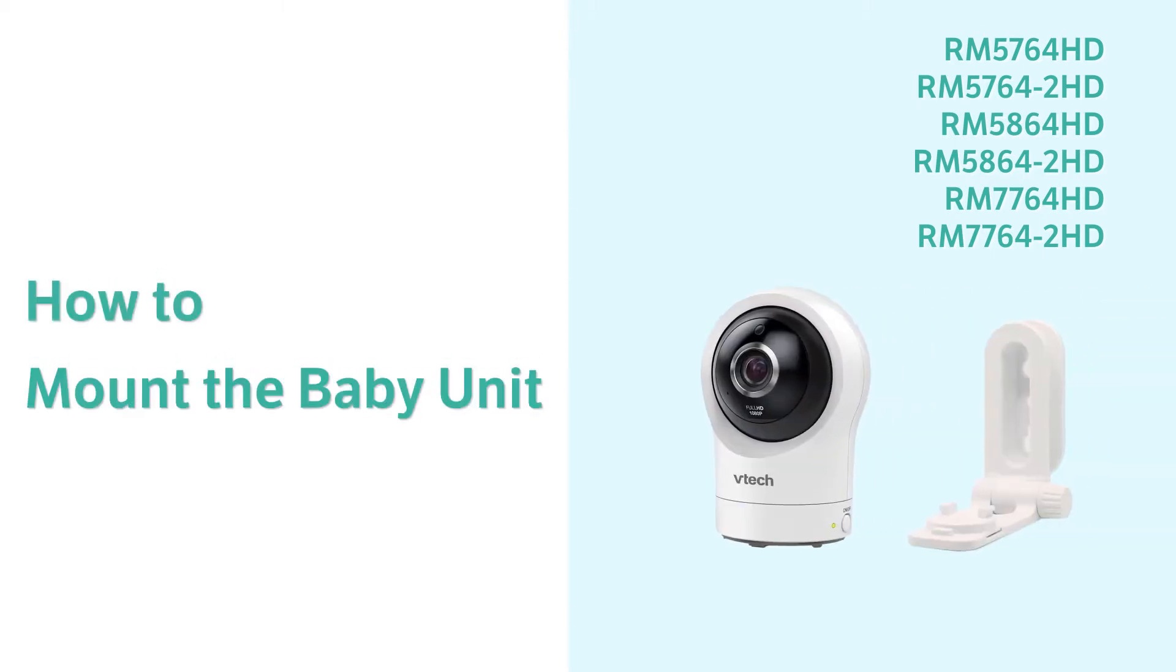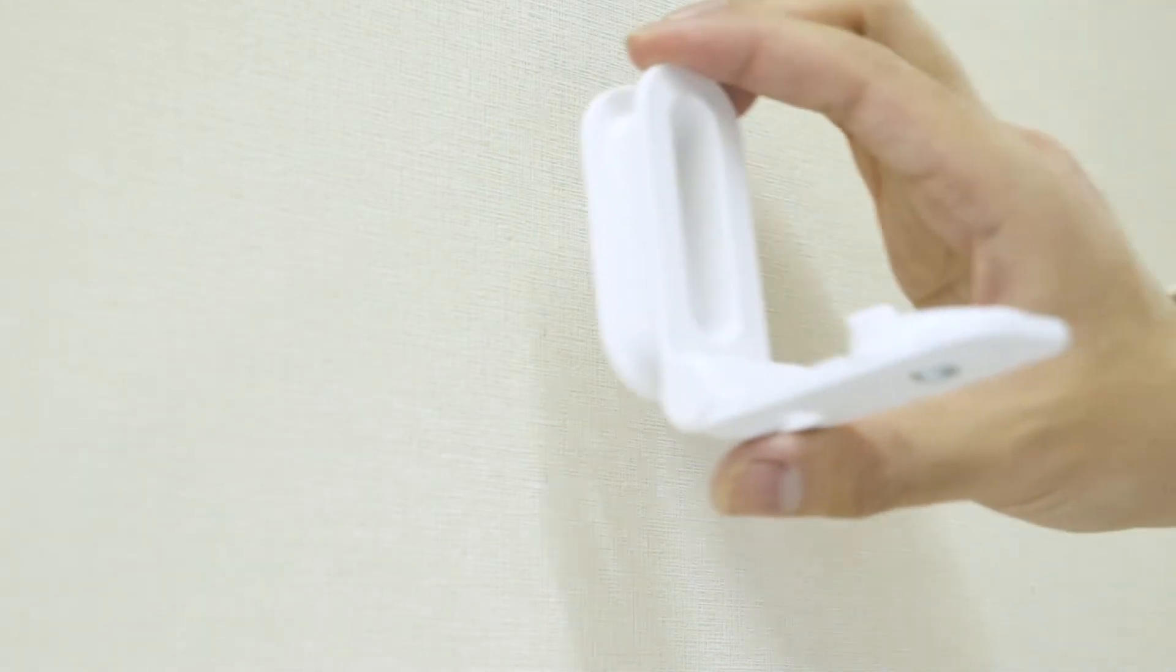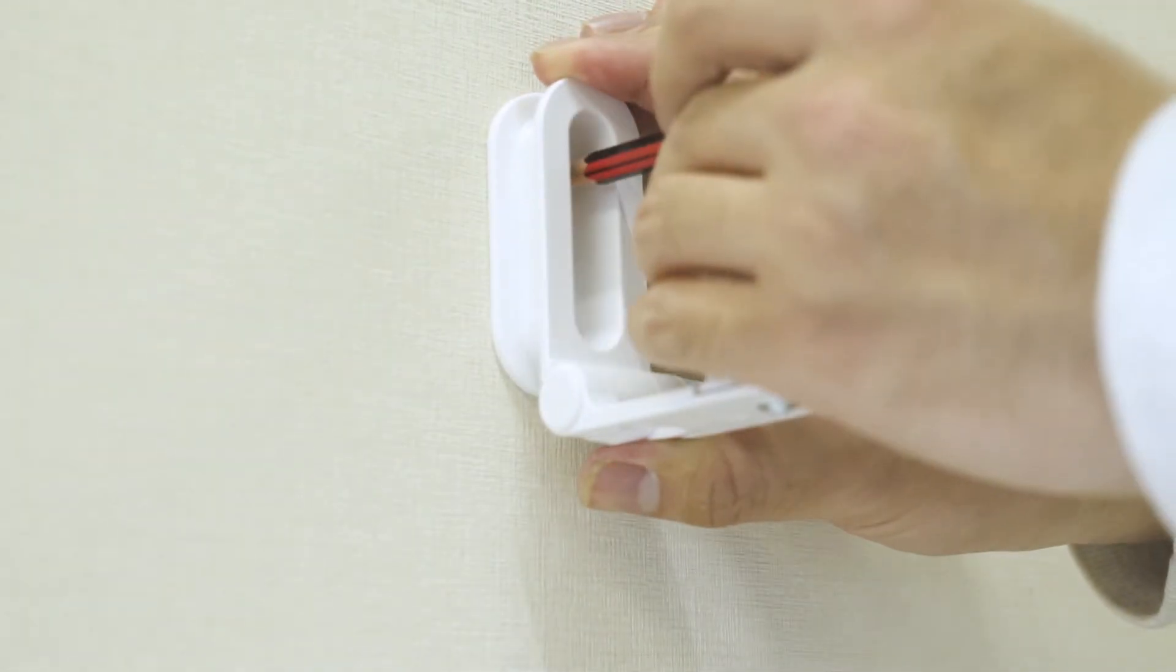Mount the baby unit on the wall and see clearly into the baby's room. Here is how. Find a good spot on the wall that can see your baby clearly.